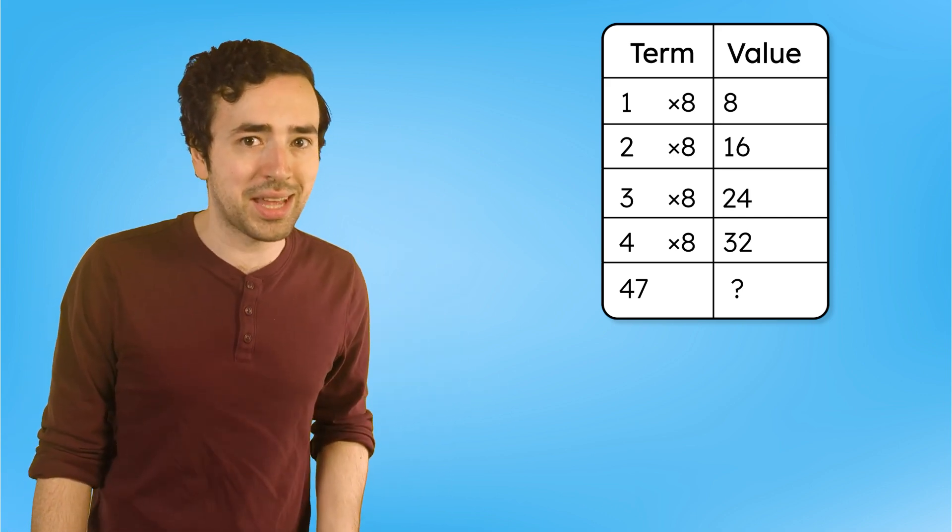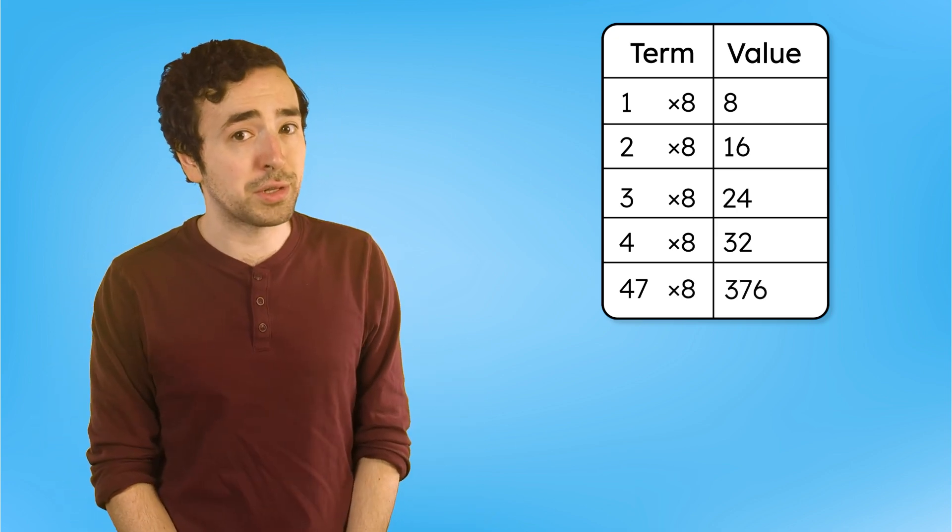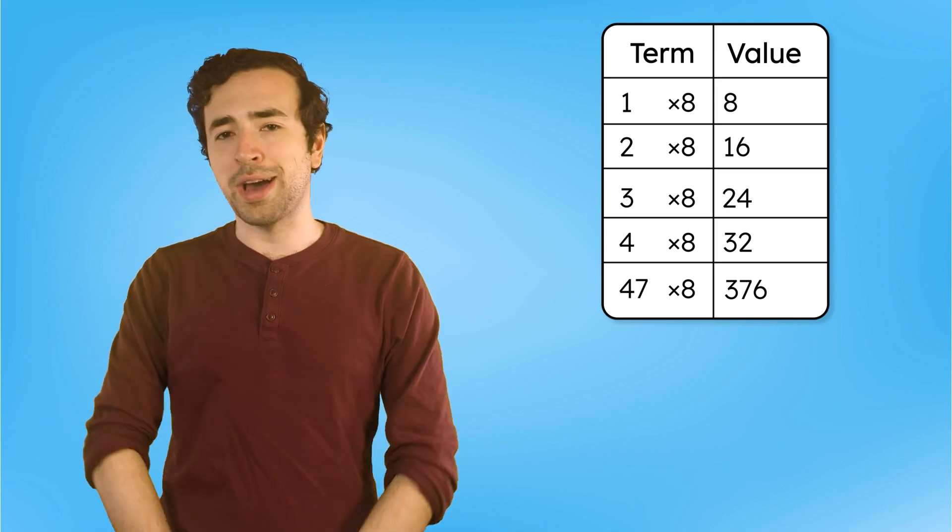Instead of listing every term from one to 46, we can use the rule to jump ahead. All we need to do is multiply 47 times 8, and that equals 376. Great job, mathematicians.